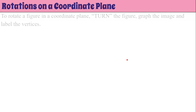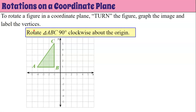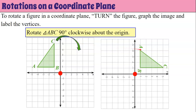Now let's look at rotations on the coordinate plane. To rotate a figure in a coordinate plane, we're going to turn the figure, graph the image, and label the vertices. Our instructions state: rotate triangle ABC 90 degrees clockwise about the origin. The origin is our center of rotation, so everything stays the same distance. B stays the same distance from the origin, and we go to the right because it's clockwise — one 90-degree turn. If you turned your computer, this is what the triangle would look like, noting that B just changed the quadrant it was in, going from quadrant two to quadrant one.